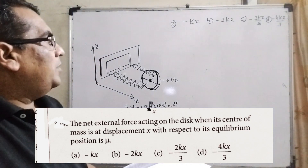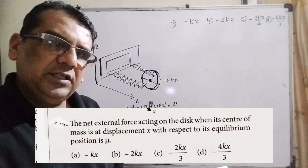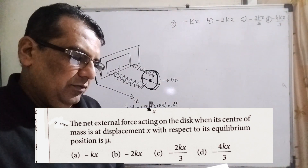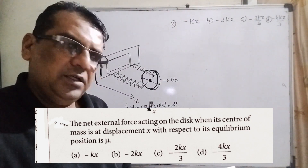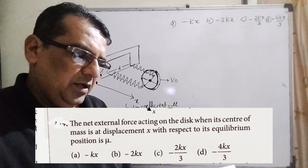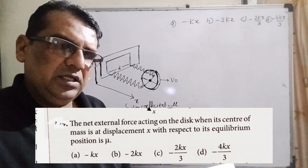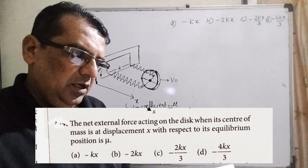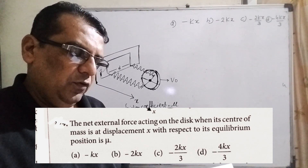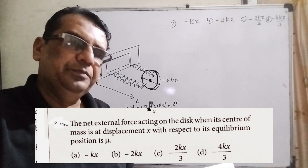You have four options. Option A: minus kx. Option B: minus 2kx. Option C: minus 2kx/3. Option D: minus 4kx/3.